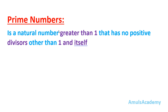Prime numbers are nothing but a natural number greater than 1 that has no positive divisor other than 1 and itself. Note that 1 is not a prime number. So prime numbers are natural numbers greater than 1 and that number should not have any divisor other than 1 and itself.